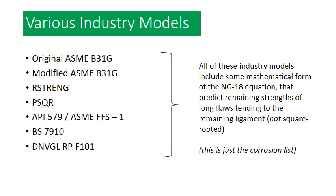This NG18 based equation is used in the original ASME B31G model, the modified B31G model, R-streng, P-squared, API 579, British Standard 7910, and DNB's recommended practice F101. When you think about it, all of these models are predicting the remaining strengths of long flaws tending to a remaining ligament in a linear fashion, as opposed to the square root fashion that the majority of the data demonstrates is valid. This is really just the list of corrosion models that use the B31G based model — it's also used in various cracking models, though that opens a whole other can of worms.